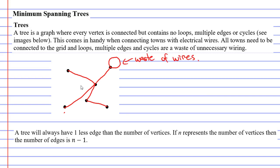What else do they not want? They don't want multiple edges. For example, let's say this is vertex A and vertex B. Multiple edges means connecting the same two vertices by two edges. That once again is a waste of wires. There's no need to have more than one set of electrical wires connecting towns.